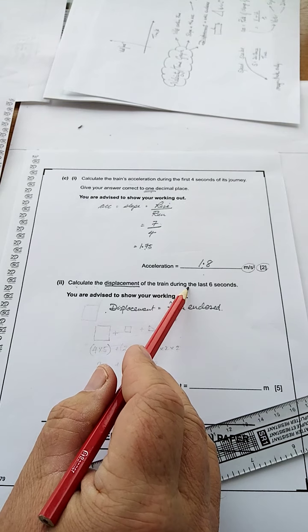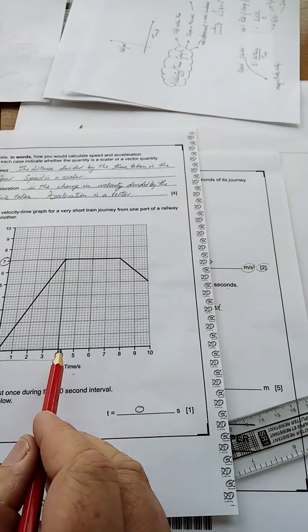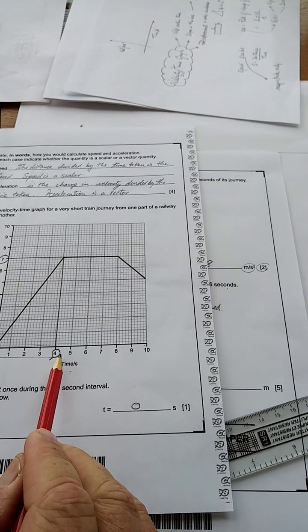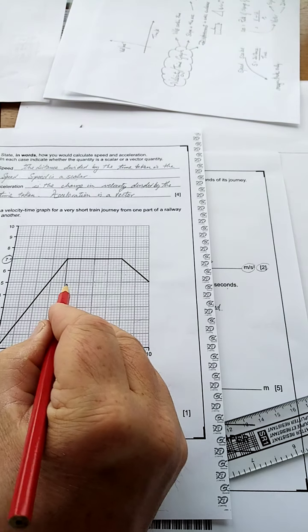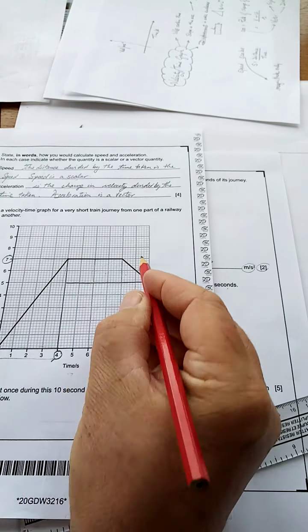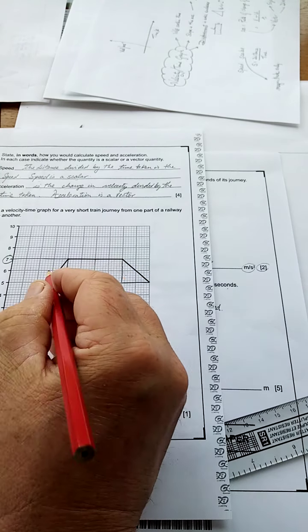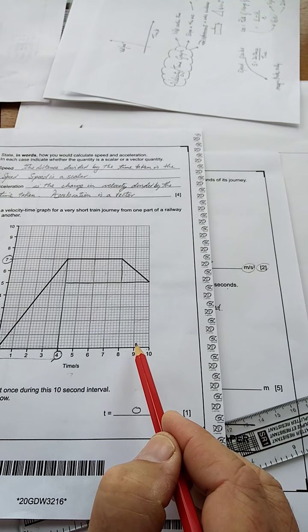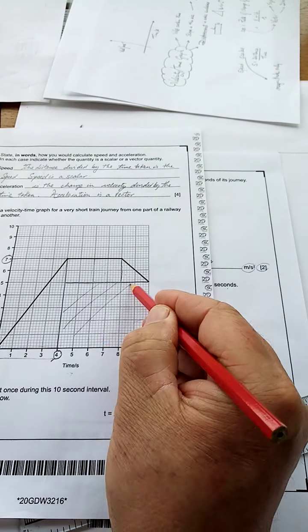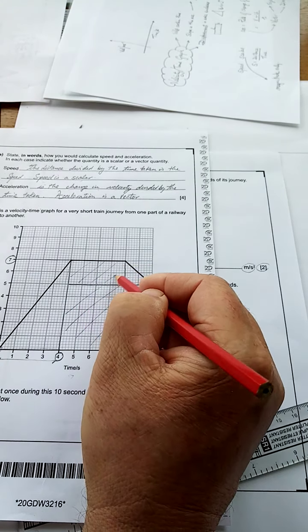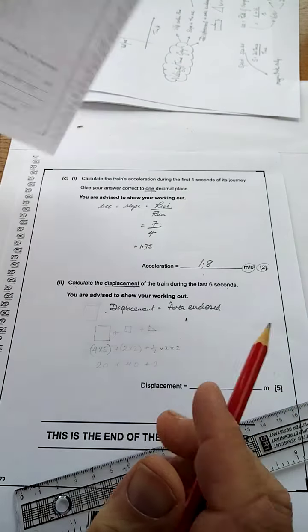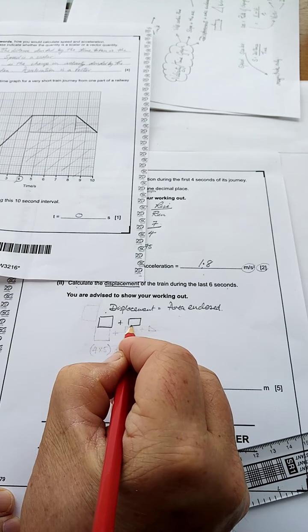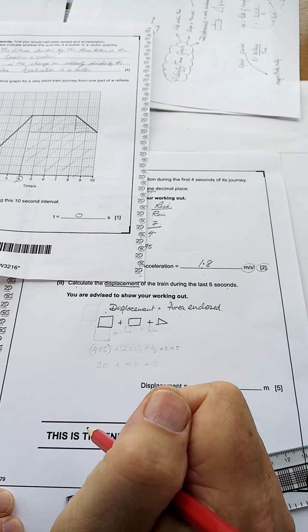You can't leave the displacement of the train during the last six seconds. The last six seconds is from 4 to 10. So there's, look at the shapes we have. I want to find that area there. All that area. Just watch. Follow the pencil. All of that. That's what I want to find. Now, break it up. There's a rectangle. There's another rectangle. And there's a triangle. So the displacement is area enclosed. So, it's a rectangle, plus another rectangle, plus a triangle.